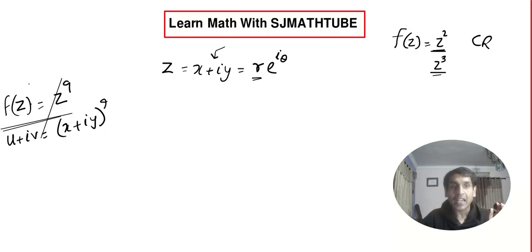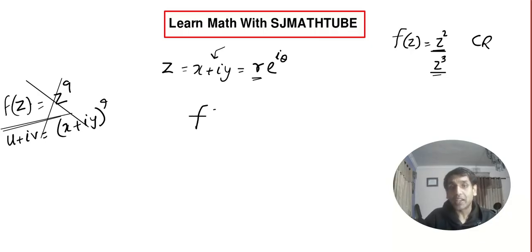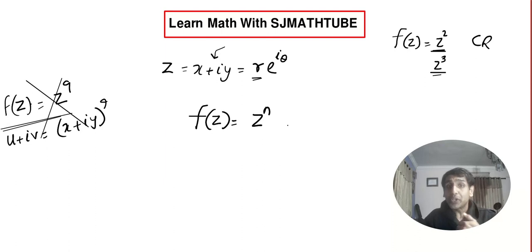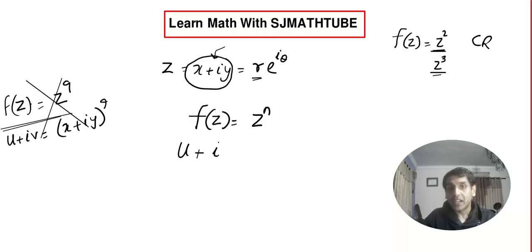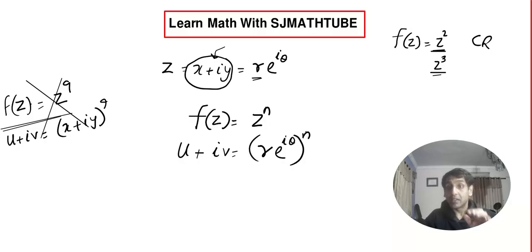If you love that method, it's up to you. I am not going to do this method. Instead, imagine we have to prove that f(z) = z^n is analytic. What I am going to do is, instead of the Cartesian form, I am going to convert our function into (r·e^(iθ))^n.